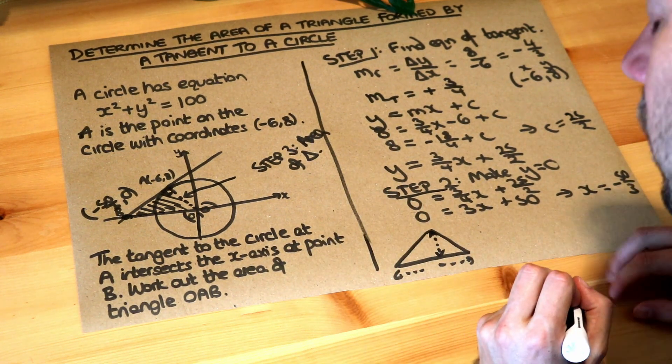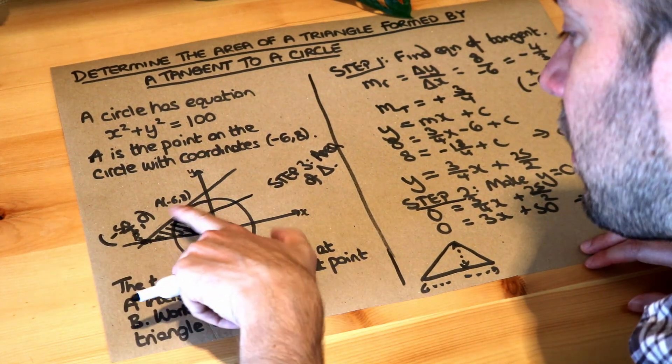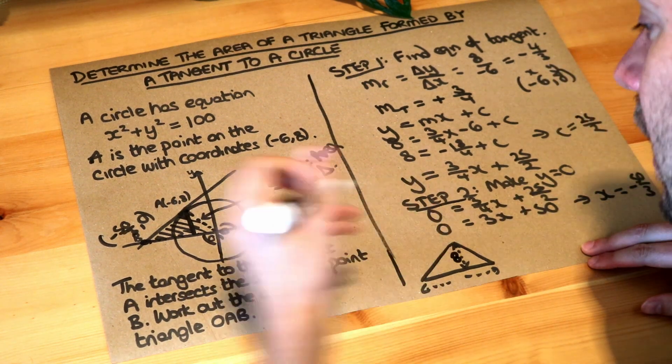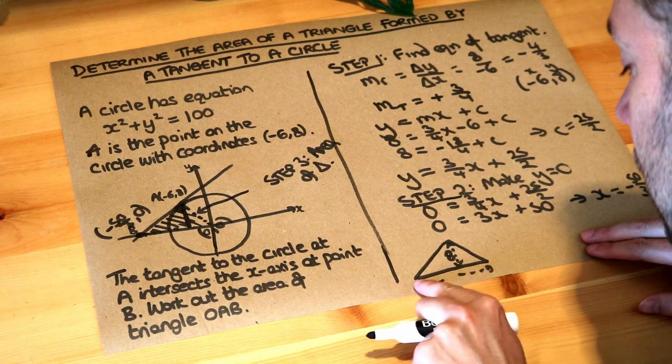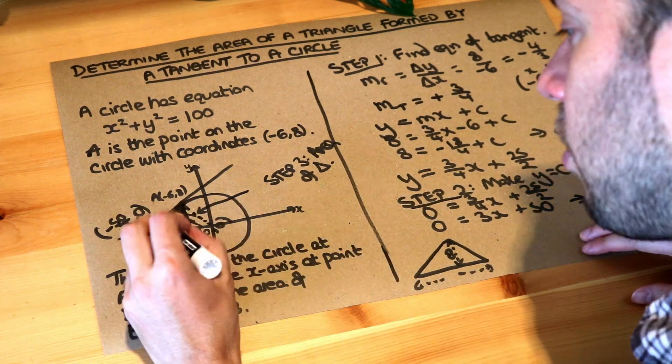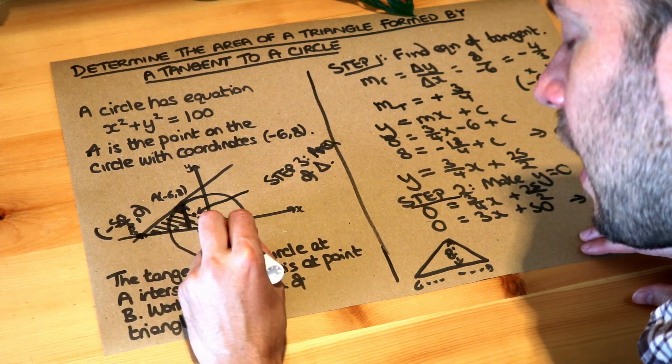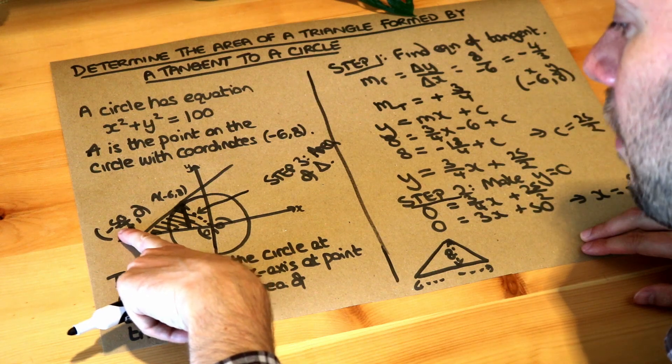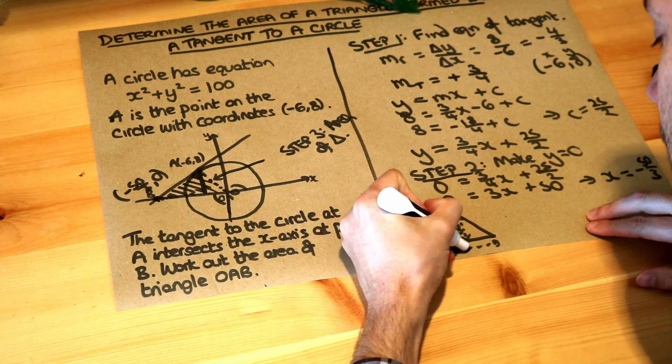Now let's think from the diagram what these are. This height here, well we can see that that y value here is 8, so that height must be 8 because it's 8 above the x-axis here. And this base here, if we look here, it's the distance between here and here, B and the origin. We can see because that x value is minus 50 over 3, that width there must be 50 over 3. So we've got 50 over 3.